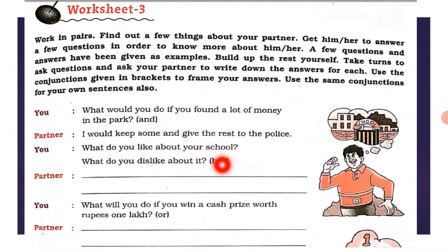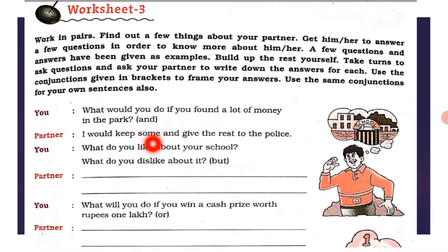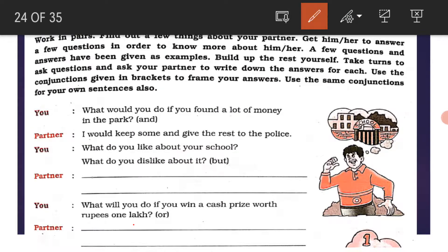For each, use the conjunctions given in brackets to frame your answers. You asked your friend: 'What would you do if you found a lot of money in the park?' Use the conjunction 'and'. Your friend answered: 'I would keep some and give the rest to the police.' Two independent clauses connected by 'and' — compound sentence.